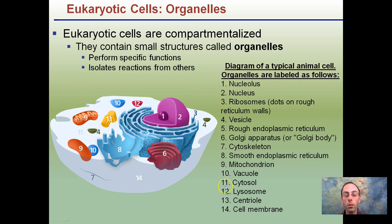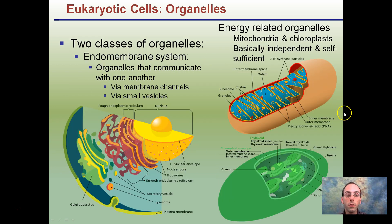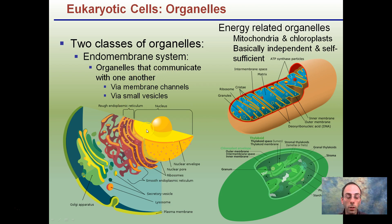Understanding what all these organelles do will be saved for another video. There are two classes of organelles. First, the endomembrane system — these are organelles that communicate with one another via channels, including the endoplasmic reticulum and the Golgi apparatus.